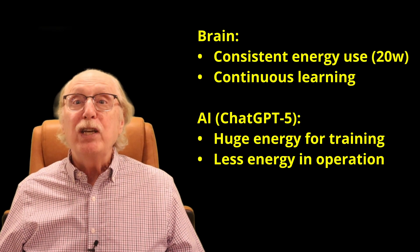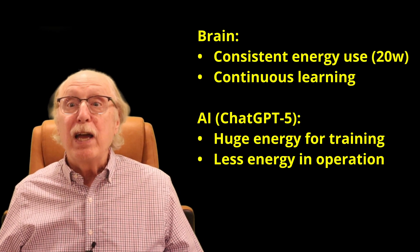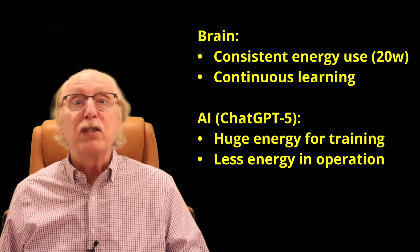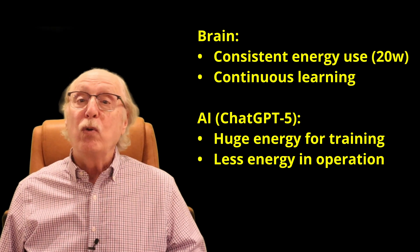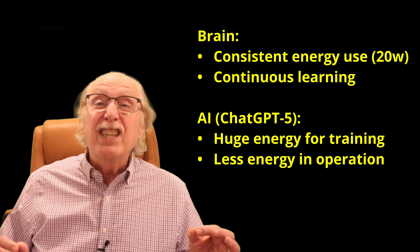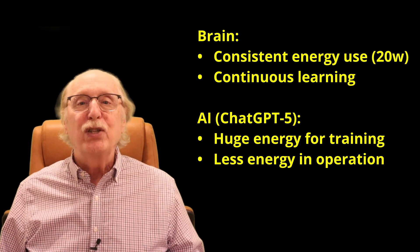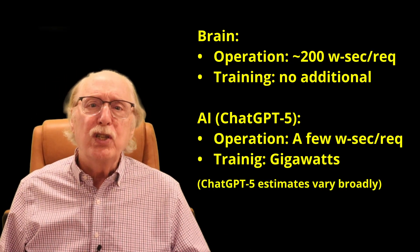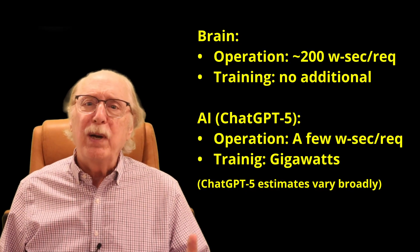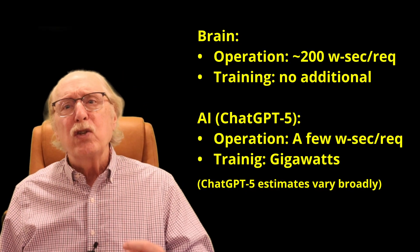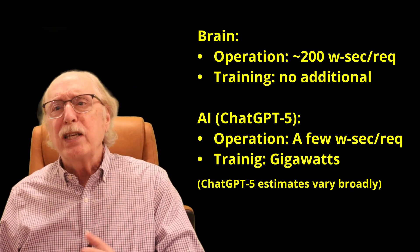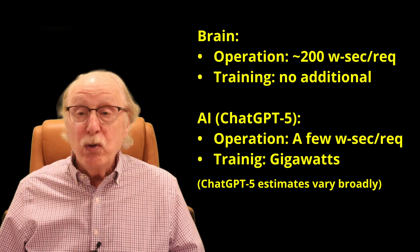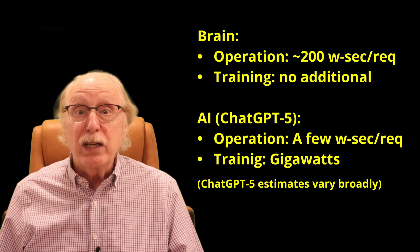In operation, though, it can respond to an individual request using only a few watt-seconds of energy. By contrast, your brain runs continuously on about 20 watts, so if you take 10 seconds to answer a question, that's 200 watt-seconds — a lot more than ChatGPT.